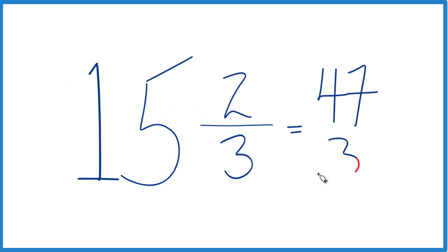Then we just bring the denominator 3 across, and we're done. That's the improper fraction for the mixed number 15 and two-thirds.